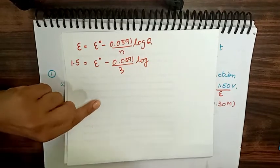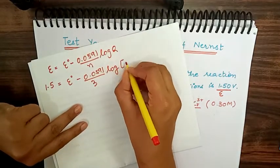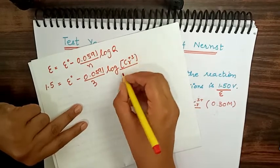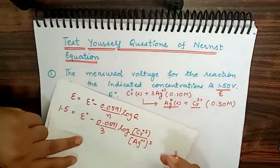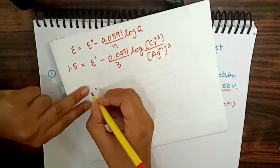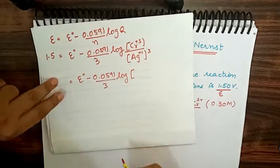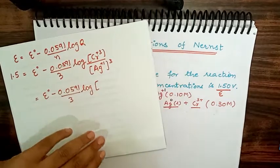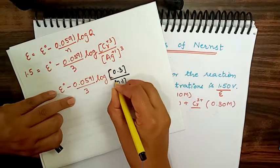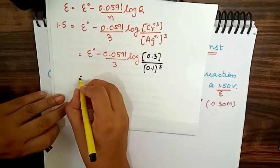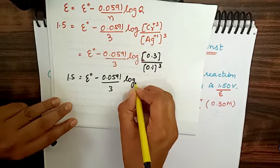Now we set up Q, the reaction quotient. Pure solid concentration is taken as unity, so Chromium solid = 1. Q = [Cr³⁺] / [Ag⁺]³ (with stoichiometric coefficient 3 in the exponent). The given concentrations are: Chromium ion = 0.3 M and Silver ion = 0.1 M.